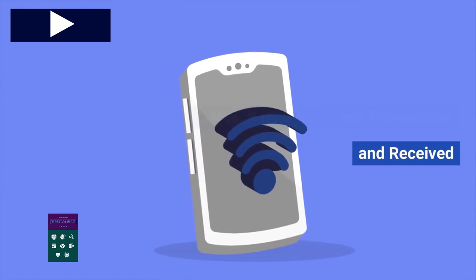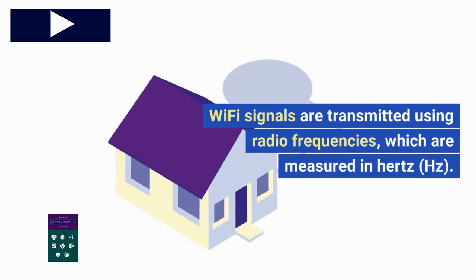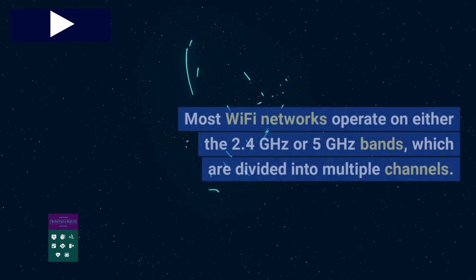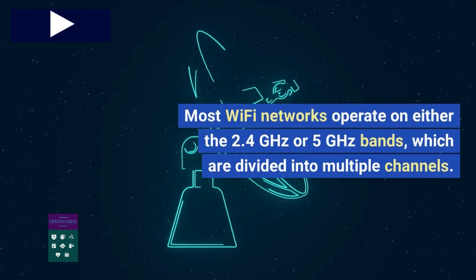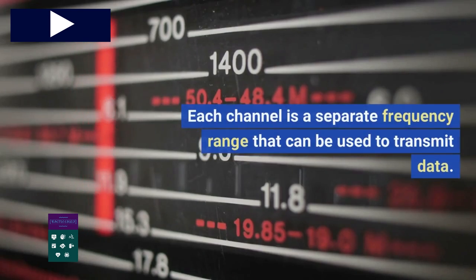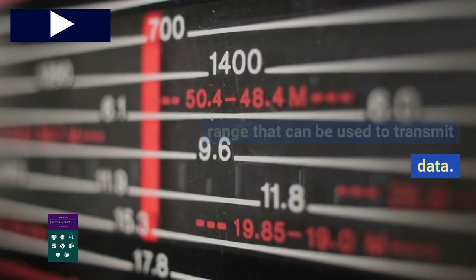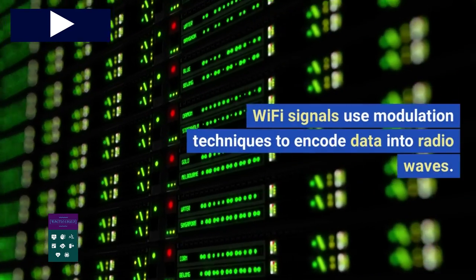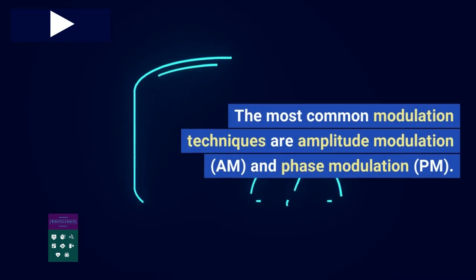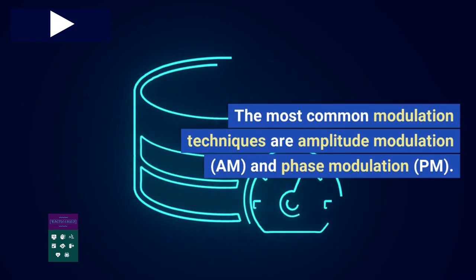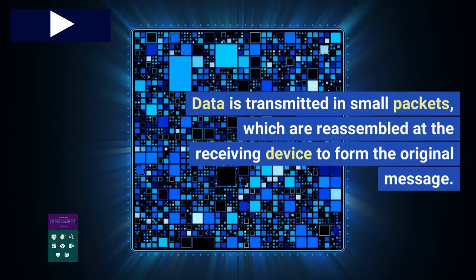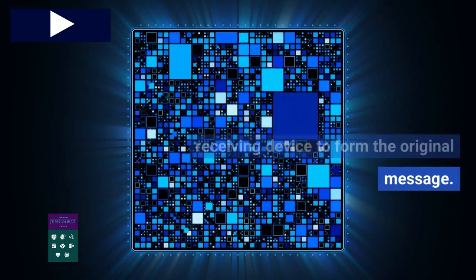How Wi-Fi Signals Are Transmitted and Received: Wi-Fi signals are transmitted using radio frequencies, which are measured in Hertz (Hz). Most Wi-Fi networks operate on either the 2.4 GHz or 5 GHz bands, which are divided into multiple channels. Each channel is a separate frequency range that can be used to transmit data. Wi-Fi signals use modulation techniques to encode data into radio waves. The most common modulation techniques are amplitude modulation (AM) and phase modulation (PM). Data is transmitted in small packets, which are reassembled at the receiving device to form the original message.